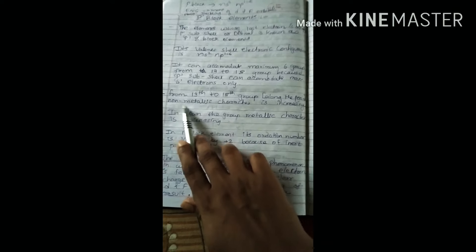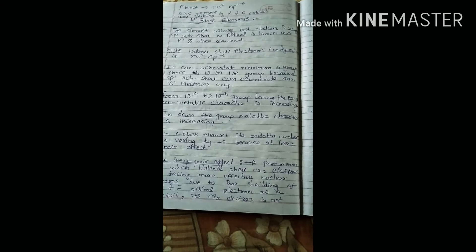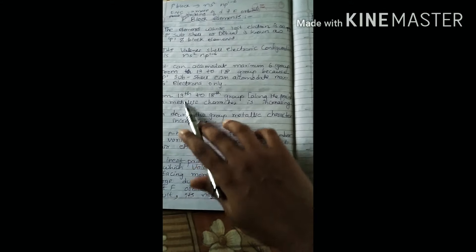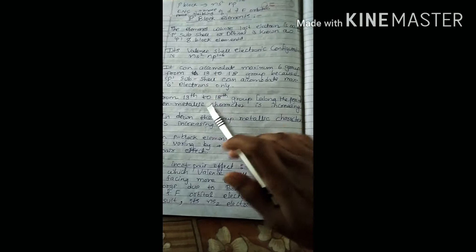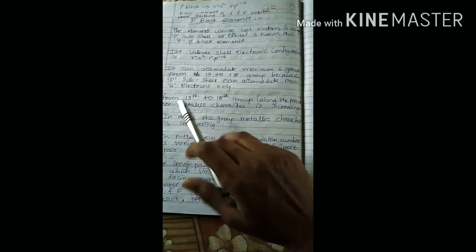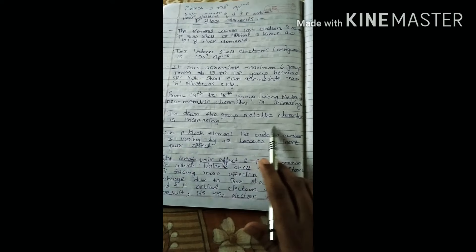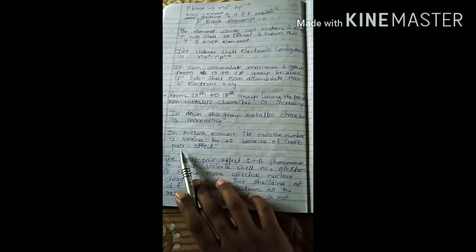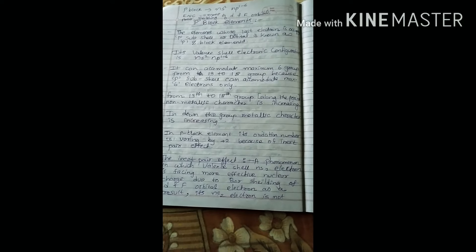Along the period, metallic character is increasing. In this full chapter, you have to understand the periodic table from your textbook and keep in mind what is happening from group 13 to 18. Metallic character is increasing along the period, and in the group, metallic character is increasing down the group.